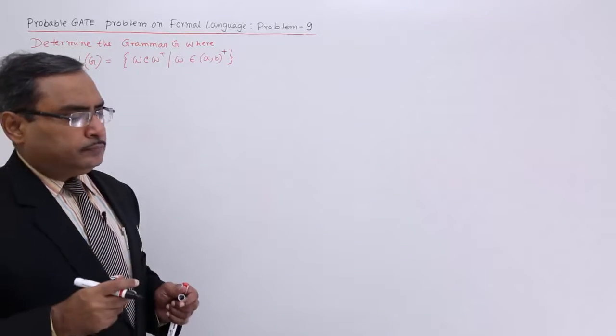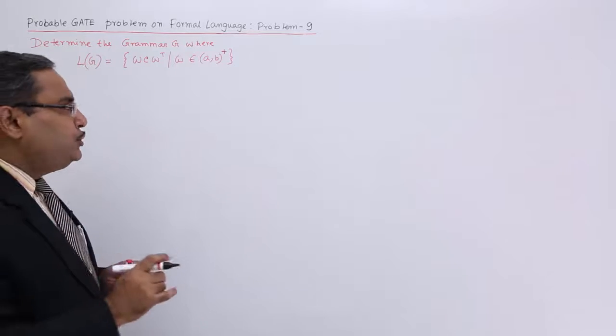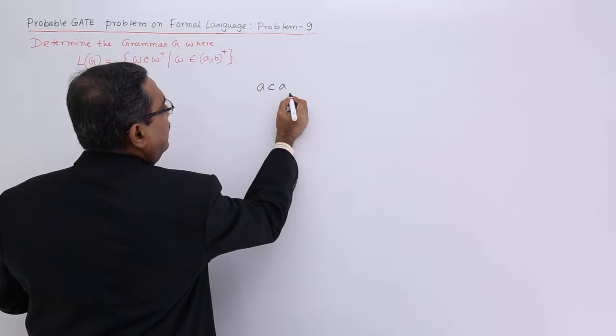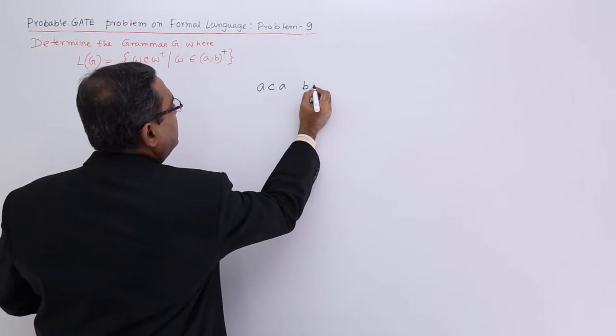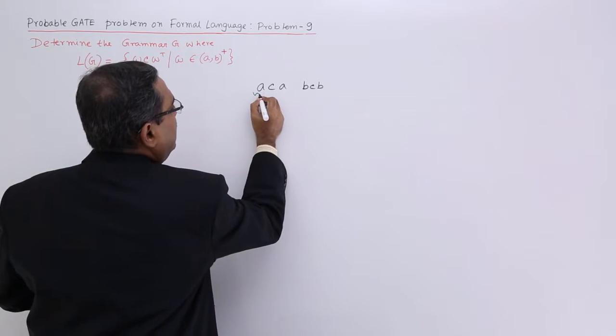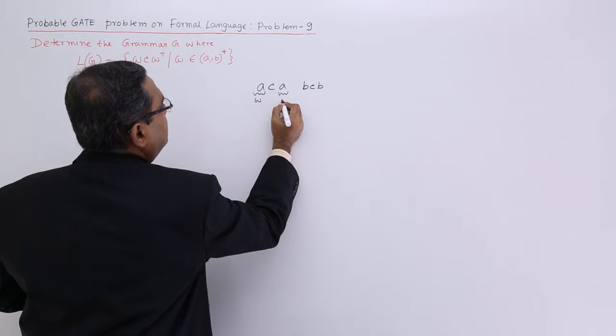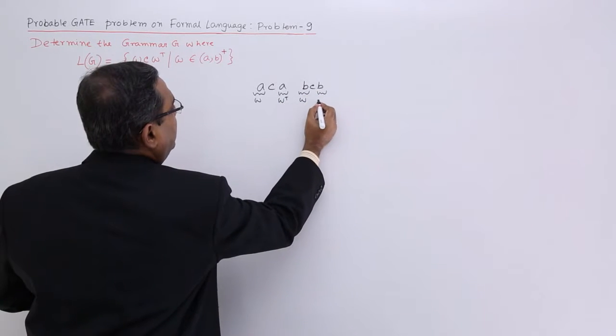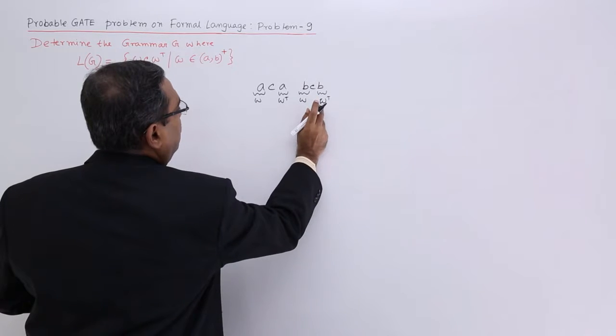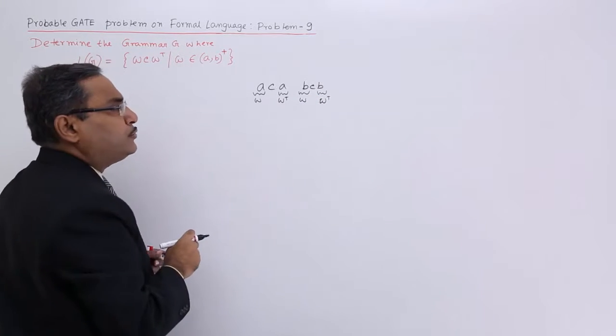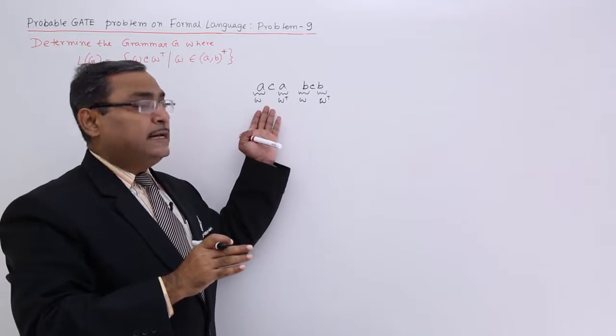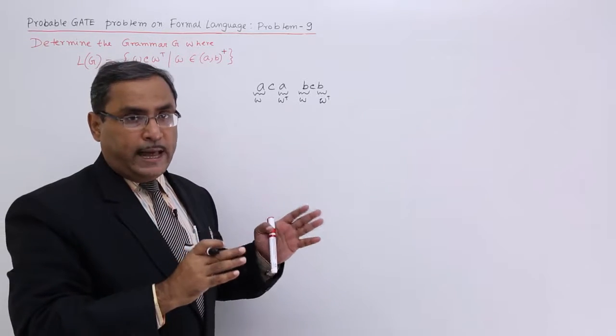I know that in this case the minimum string which can be formed is A, C, A or say B, C, B because if it is W then this is my W of T. If it is W then it will be W of T. In this way I can easily derive this one, that is the minimum string which you can have.